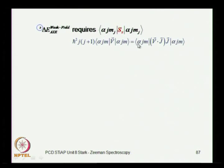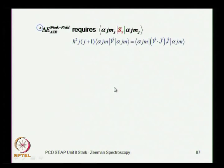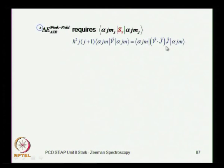That is why we had to find some mechanism to obtain this matrix element. We found it using two alternative procedures: one based on vector identities for vector operators — these are irreducible tensor operators of rank one — and the other procedure based on the Wigner-Eckart theorem. Using both procedures, we are led to a relationship which gives the matrix element of an arbitrary vector operator in terms of V·J and J. If this V happens to be our S operator, we can apply it for this case.